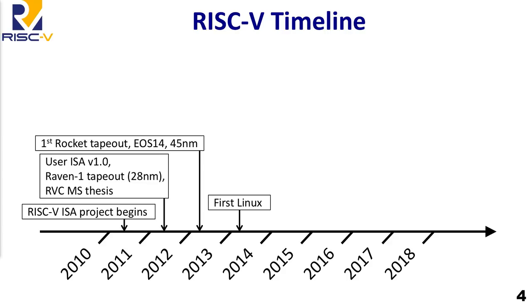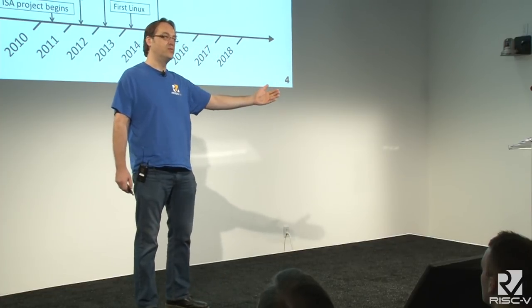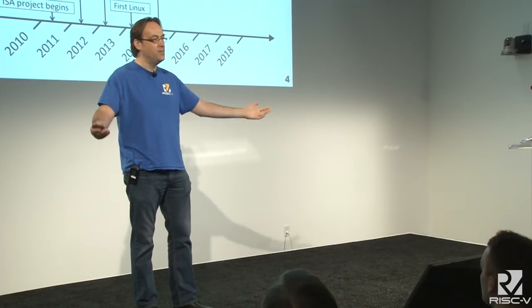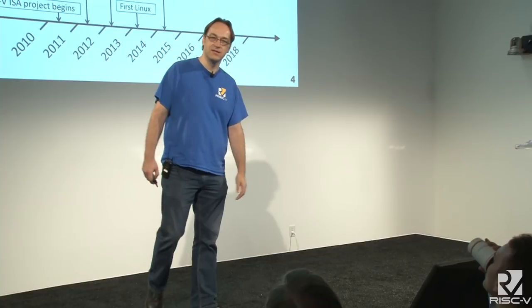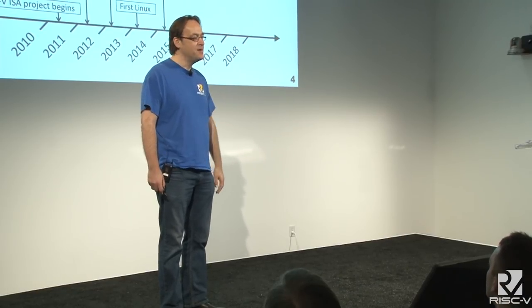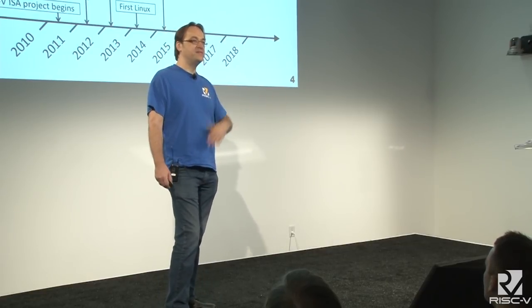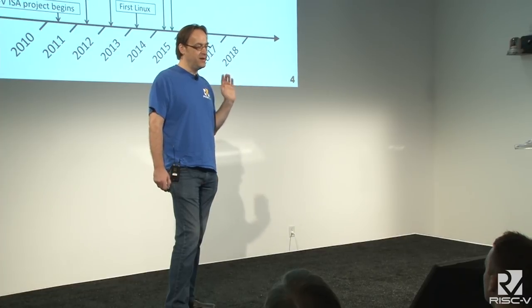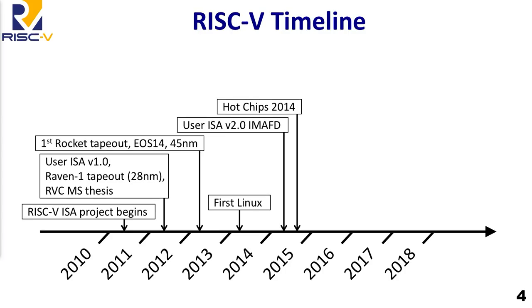The first Linux port was in 2013 by two undergraduates, Albert Ou and Quan Nguyen — they came to me wanting a project, I said put Linux on RISC-V sort of jokingly, and a couple of semesters later they'd done it. In 2014 we started seeing pull from outside and decided to push it out as an open standard. A key thing we did in hindsight — a masterstroke of genius — was we froze it when we released it. We said here's the ISA, version 2, and it's fixed. The standard set of extensions IMAFD was established and we had a big PR push at Hot Chips.